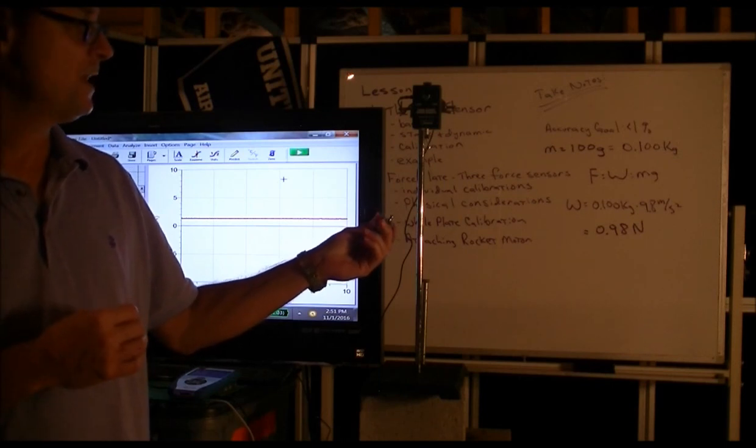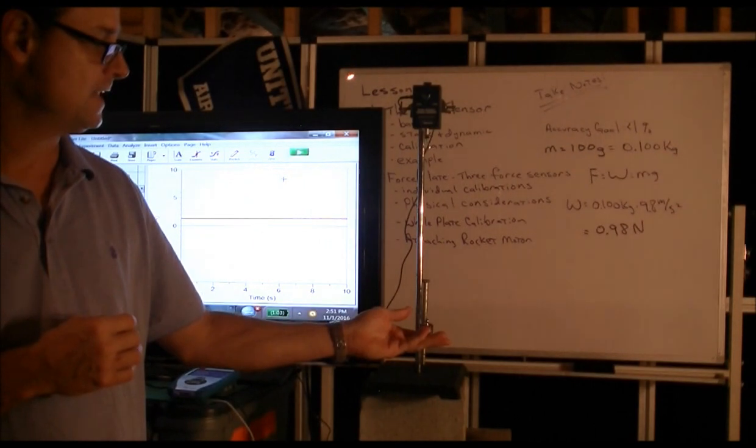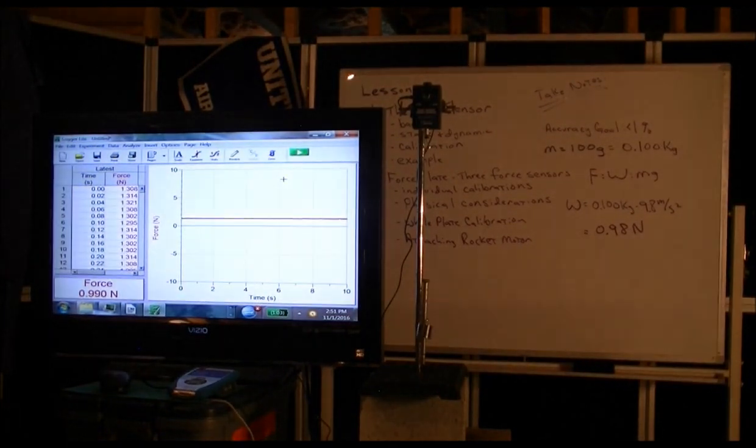So what we just did electronically by hitting that zero button is like subtracting the weight of the tray. So you're measuring relative to the added weight, which in this case is simply the suspended mass. So when we do that, the force becomes 0.99 newtons,